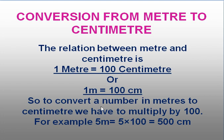To convert a number in meters to centimeters, we have to multiply it by 100. Why are we multiplying it by 100? Because 1 meter is equal to 100 centimeters. So here, to convert meter into centimeter, the number has to be multiplied by 100.